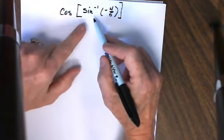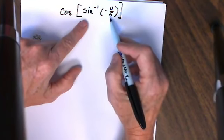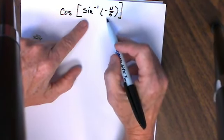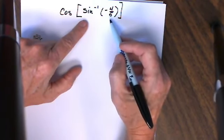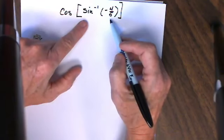But as I look inside here I see that this time I've been given a negative ratio. Again it is a ratio that I don't recognize from my chart of 30, 45 and 60 degree angles.